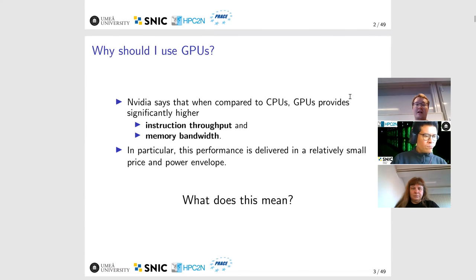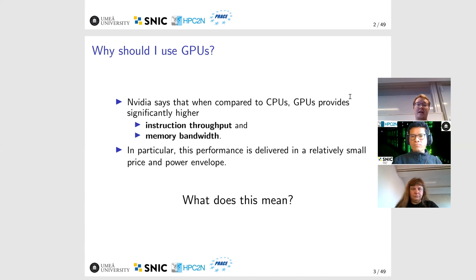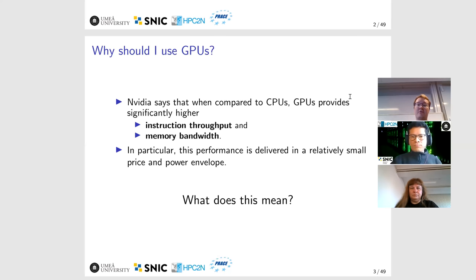If you go and look at NVIDIA's materials, you will discover that they'll tell you that if you compare one of the GPUs against a CPU, the GPU will have significantly higher instruction throughput and significantly higher memory bandwidth. On top of that, they are saying that all this performance is being delivered in a relatively small price and power envelope.